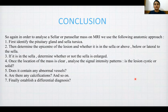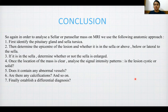In conclusion, to analyze sellar or parasellar masses on MRI, the following anatomic approach is used. First, identify the pituitary gland and sella turcica. Then determine the epicenter of the lesion — whether it is in the sella or above, below, or lateral to it. If intrasellar, determine whether the sella is enlarged. Once the location is clear, analyze the signal intensity patterns — is the lesion cystic or solid, does it contain abnormal vessels, are there calcifications? Finally, establish a differential diagnosis.